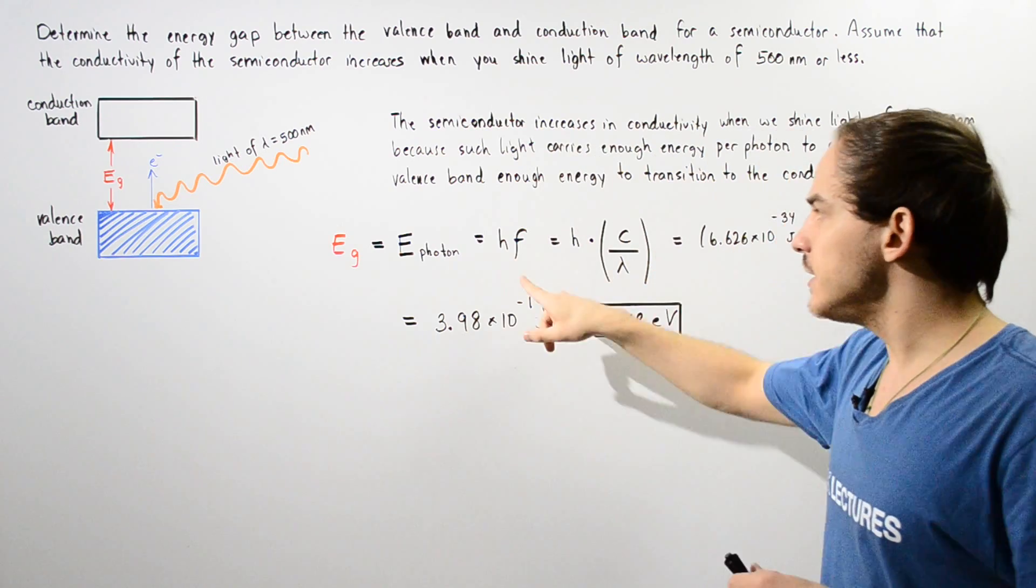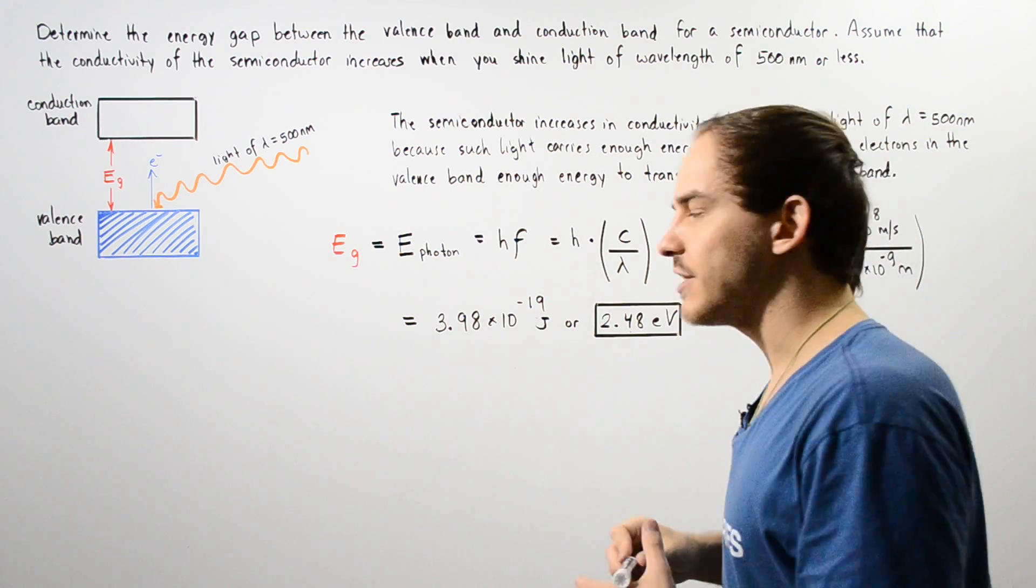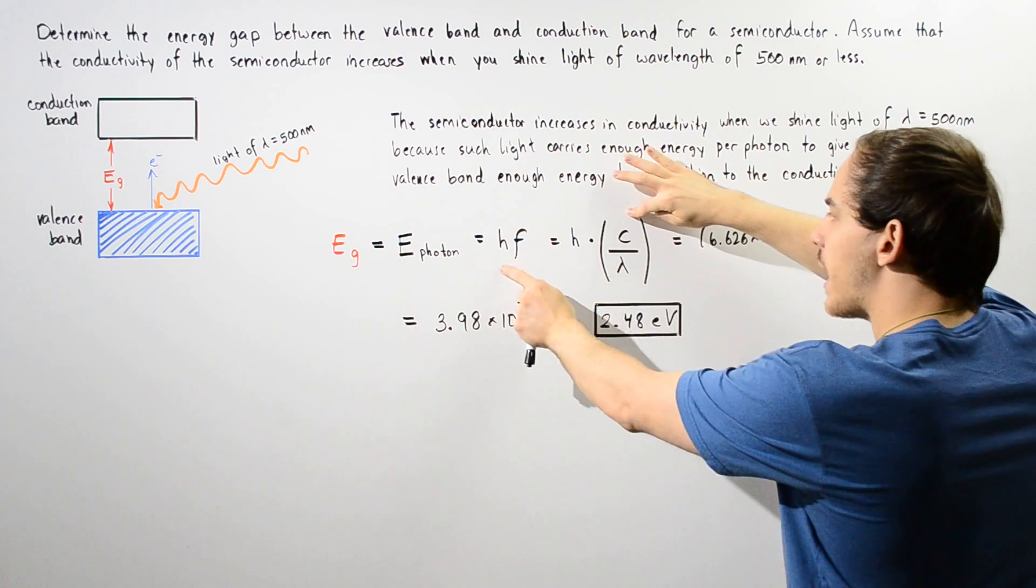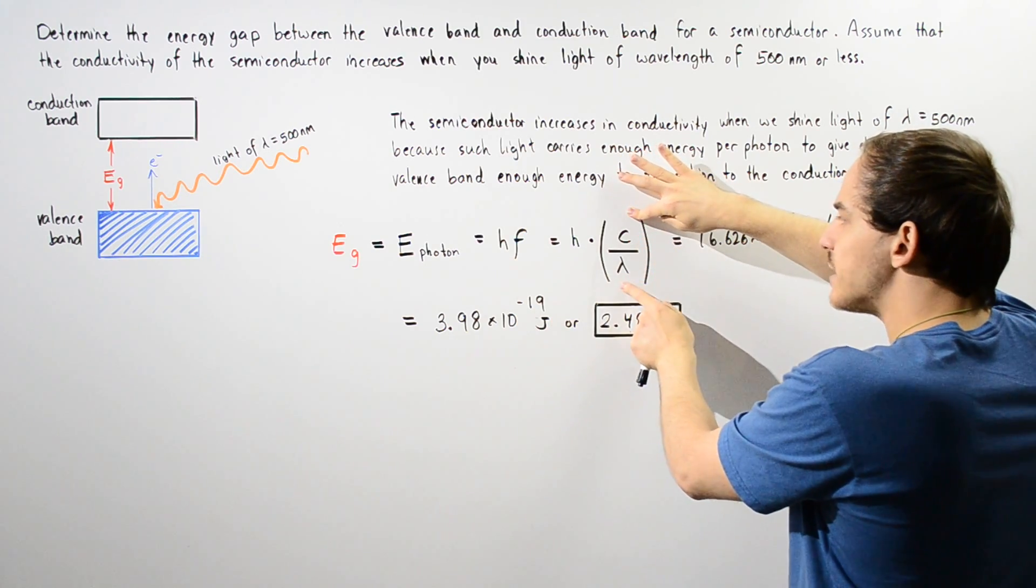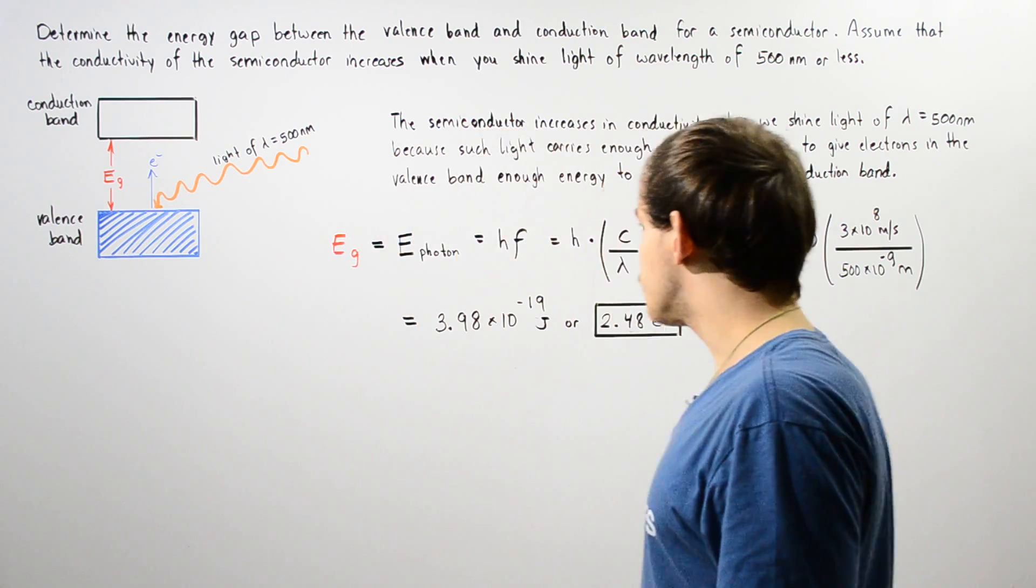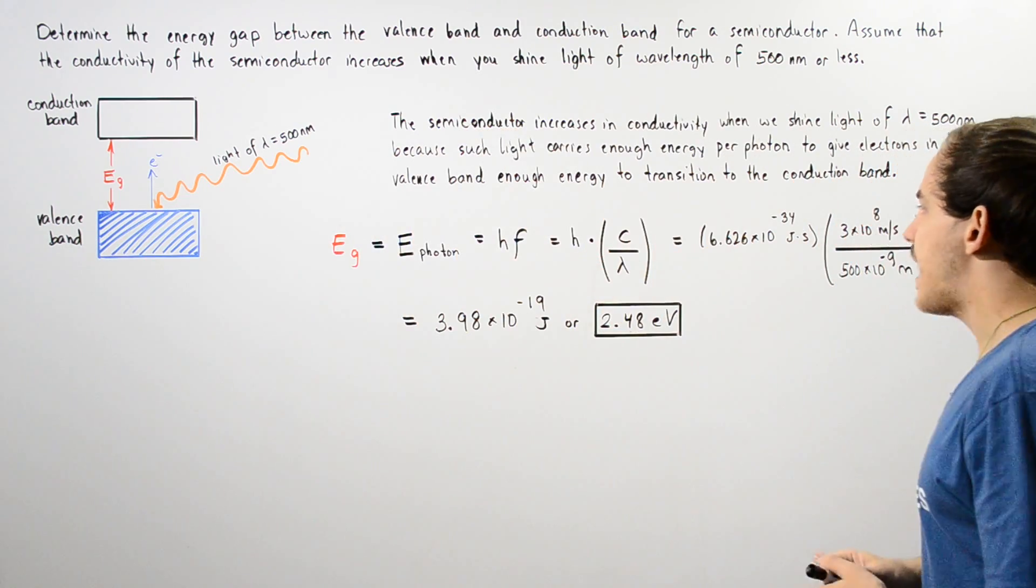And remember, the frequency depends on the wavelength and that relationship is given by this equation. So f is equal to c divided by lambda where c is the speed of light in a vacuum. So let's plug in our values.